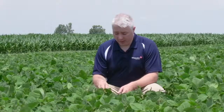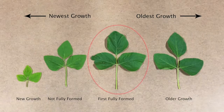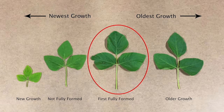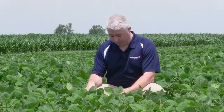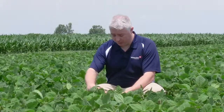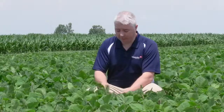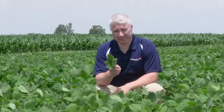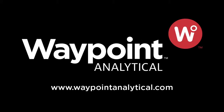In soybeans, except during the seedling stage where you'd collect the entire plant, on all other growth stages you would collect the top fully formed, fully opened trifoliate leaf. On this particular plant, the top fully opened leaf is this one here, so I would take about 25 to 30 trifoliates per sample.